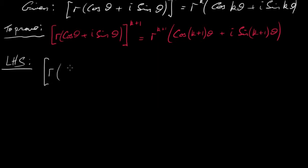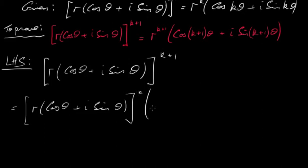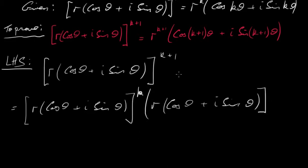So let's take the left-hand side: r(cos θ + i sin θ) to the power of k + 1. That is simply going to equal r(cos θ + i sin θ)^k times r(cos θ + i sin θ)^1. All I've done here is split this power up using the laws of indices — our complex number to the power of k times our complex number to the power of 1. You add the two indices and you get k + 1.